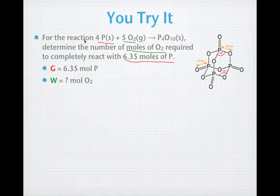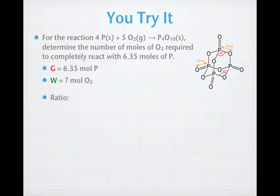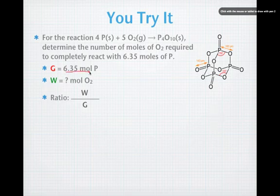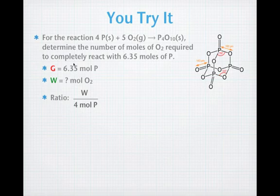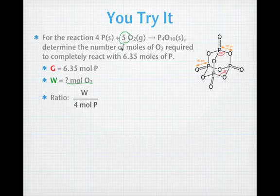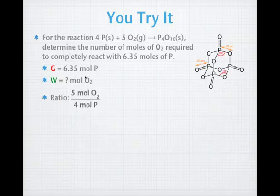Any mole ratio is going to start with our wanted over our given from the balanced chemical equation. Since we want to cancel out the moles of phosphorus from the given, we take the moles of phosphorus and put that in the denominator of our mole ratio. Our wanted is our moles of oxygen — there are 5 moles of oxygen in the balanced chemical equation, so we put that in the numerator. We get 5 moles of oxygen over 4 moles of phosphorus as our wanted-to-given ratio.